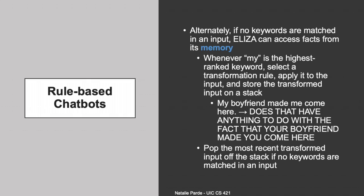There's also a second strategy ELIZA uses when no keywords are matched: recalling older information from memory. The program decides which information to store as facts using the same pattern-matching rules already discussed. For example, if the pattern for 'my' followed by anything is matched, ELIZA might not only perform the specified transformation but also store that information on a stack for later use.